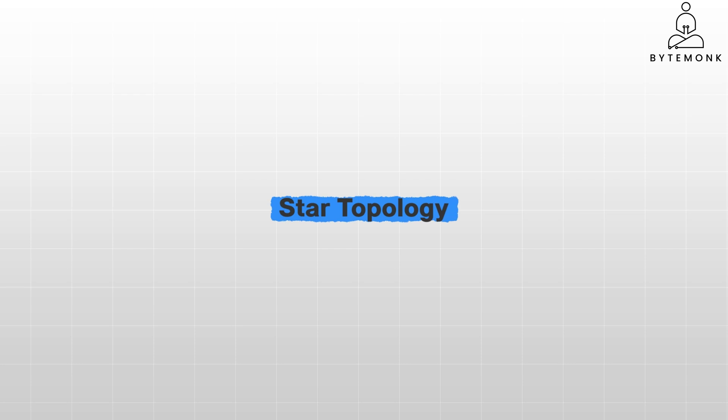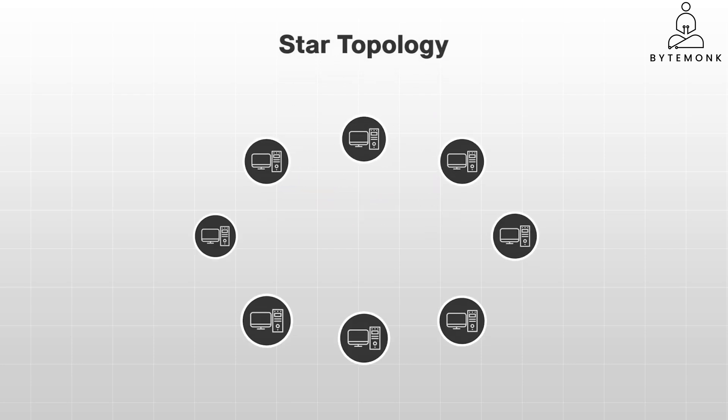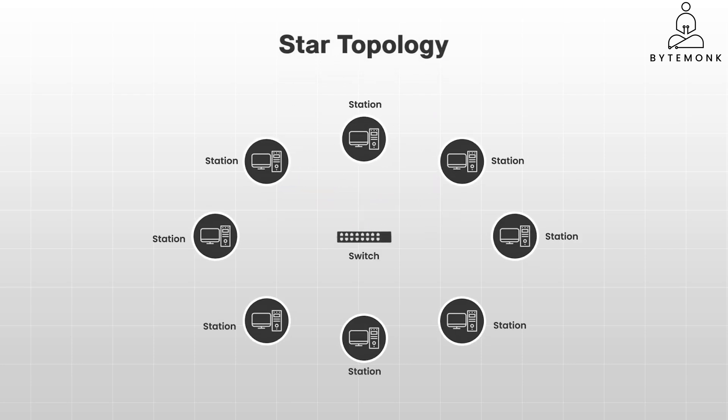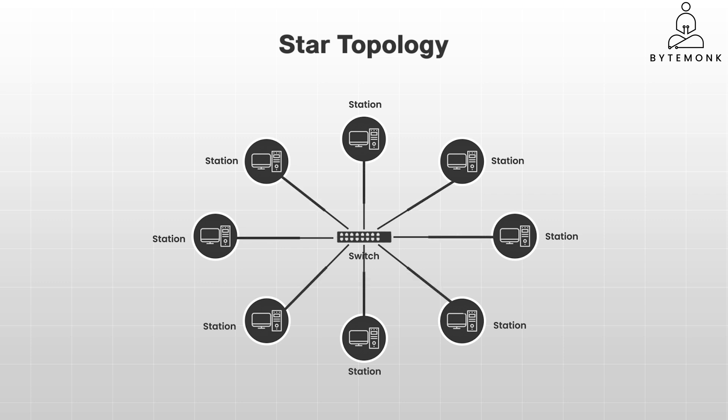Star topology is the most common network arrangement due to its flexibility and ease of management. In a star topology, all devices are connected to a single central device, often a hub, switch, or router. This central device acts as a communication hub, relaying data between the connected devices. Each device has its own dedicated cable or wireless connection to the central hub, creating a star-like pattern.